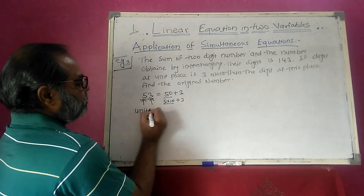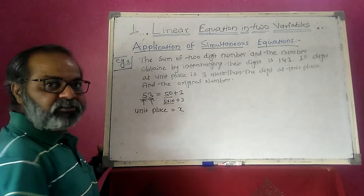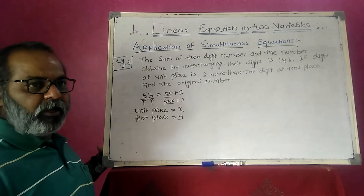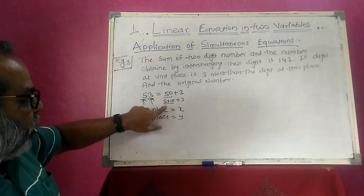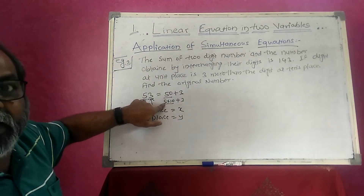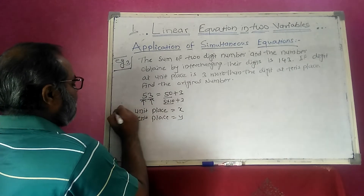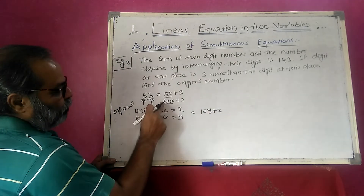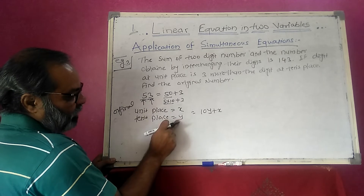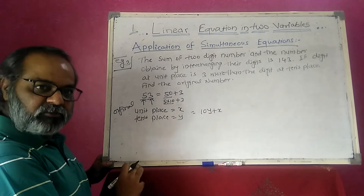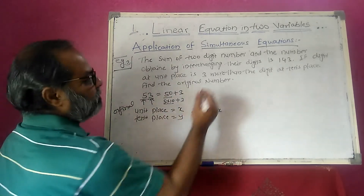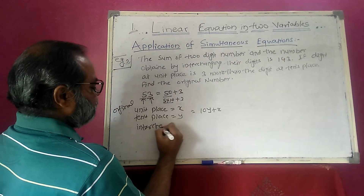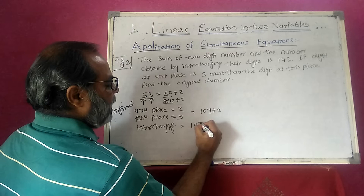I assume the units place digit is x and the tens place digit is y. So the original number is 10y plus x. After interchanging the digits, the new number becomes 10x plus y.